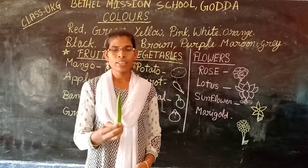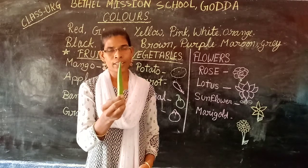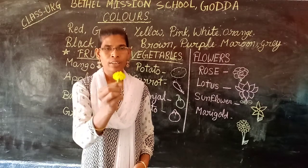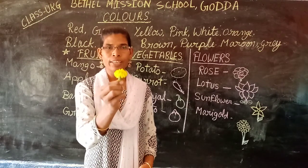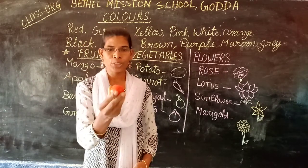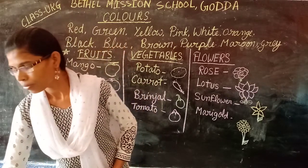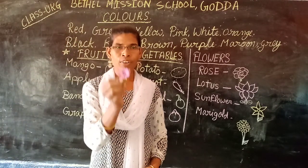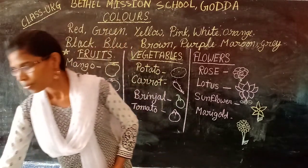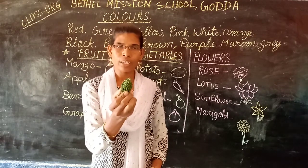Look at this. This is ladyfinger. It is green in color. This is a banana. It is yellow in color. This is tomato. It is red in color. This is a flower. It is pink in color. This is bitter gourd. It is green in color.